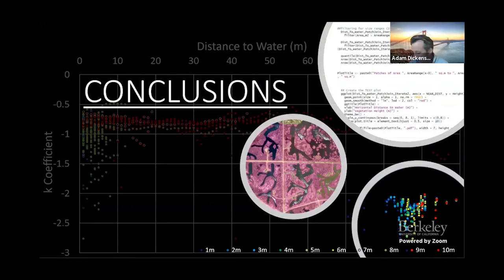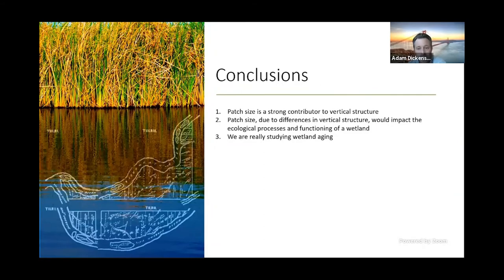So in conclusion, one, we saw that patches of different sizes are not equivalent in their vertical structure, even at the same distances to water. We also saw that the largest patches have a lower level of light attenuation, likely due to the greater amount of litter buildup in larger patches. Both of these findings would suggest that patch size is a strong contributor to vertical structure. Two, patch size then, due to these differences in vertical structure, would impact the ecological processes and functioning of a wetland. This might affect rates of photosynthesis, carbon sequestration, wildlife utilization, biodiversity, and soil accretion.